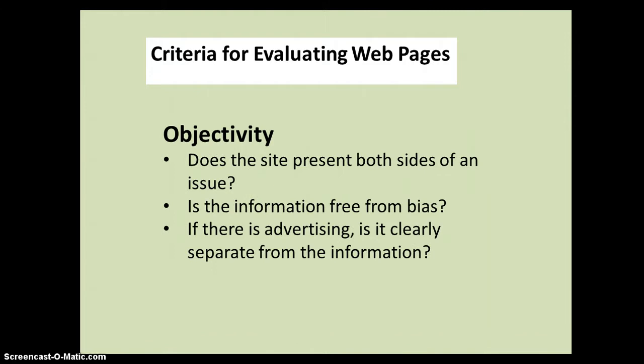Objectivity has to do with whether a site presents both sides of an issue and if it's free from bias. That's not always a huge deal — some nonprofit organizations will have a website that is in favor of a certain position. For example, an animal welfare website would not be in favor of using animals for scientific research and testing. If your project has to do with pros and cons of an issue, you need to go to another website that might give the other side. And if there is advertising, it should be separate from the information you're finding on the page.